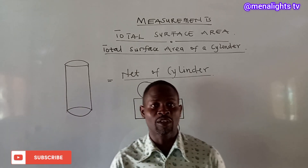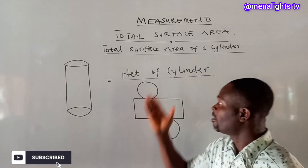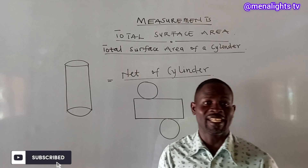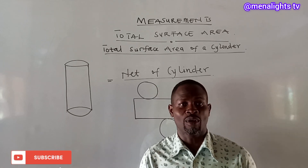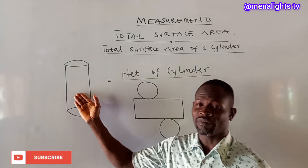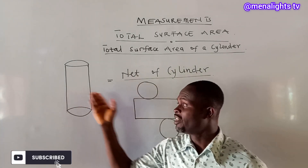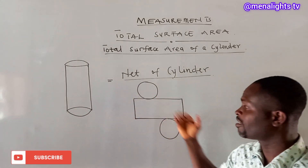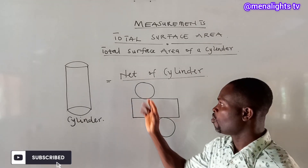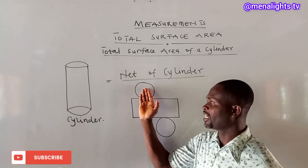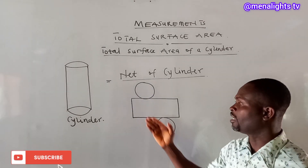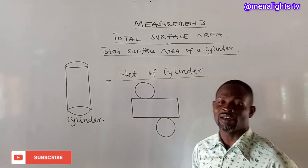So this time round, we are going to look at the total surface area of a cylinder. When we talk about a cylinder, this is an example of a cylinder, and this is the net of a cylinder. Looking at the net of the cylinder, we have a circle here, another circle, and then a rectangle.